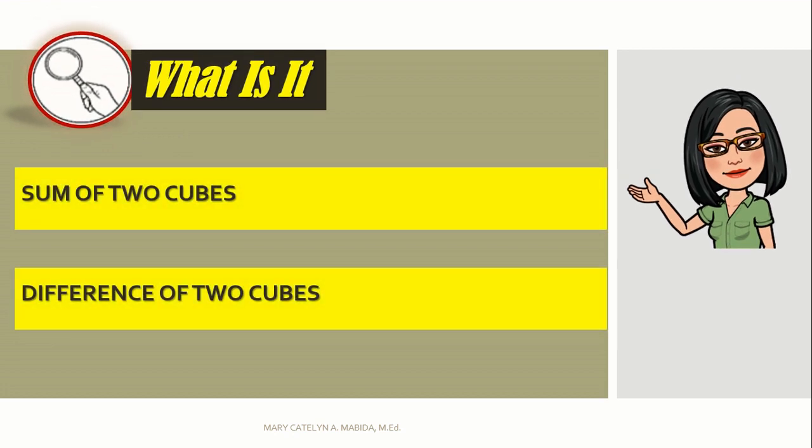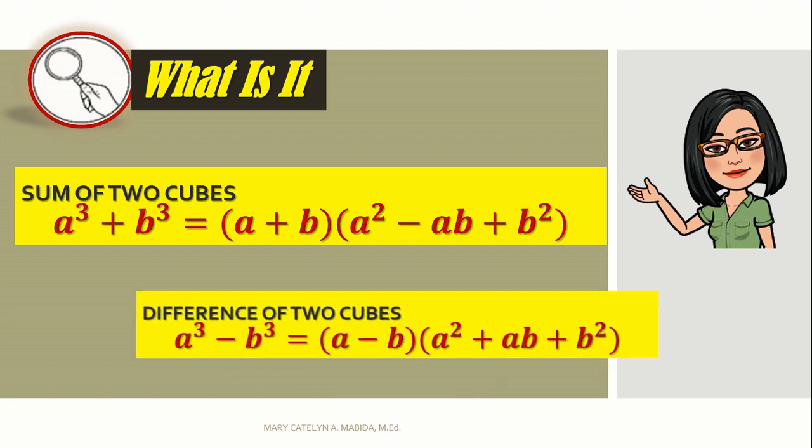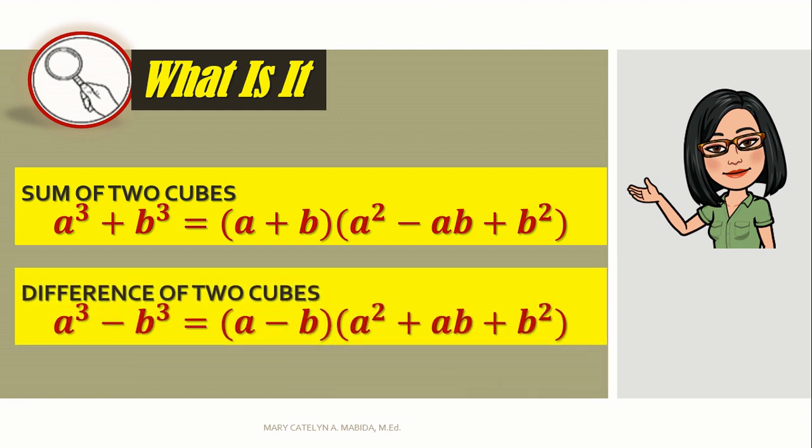The sum of two cubes has the pattern: a cube plus b cube is equal to the quantity of a plus b times the quantity of a squared minus ab plus b squared. The difference of two cubes has the pattern: a cube minus b cubed is equal to a minus b times the quantity of a squared plus ab plus b squared. Third, observe that the difference in the pattern above differs only in their signs.